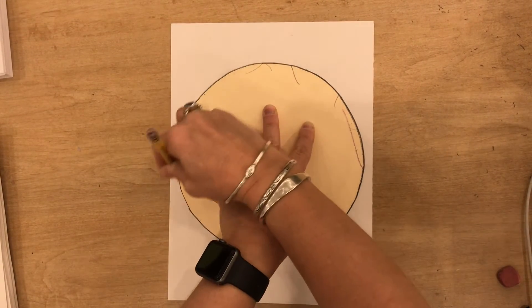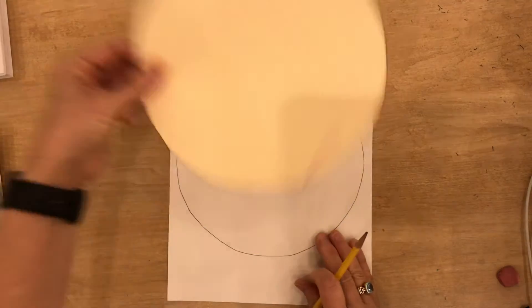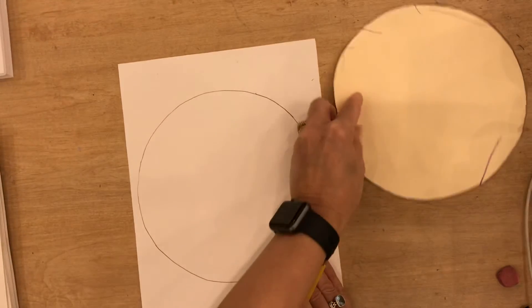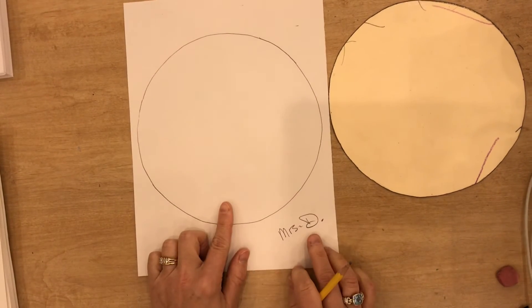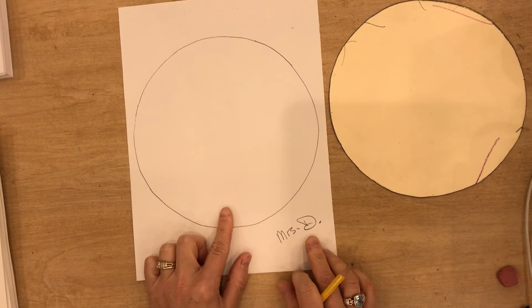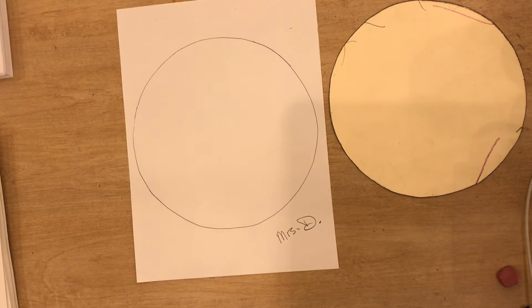This will come back up to me on my table. You're going to put your name on your paper and this is going to go in your folder. Okay, that is your next step.